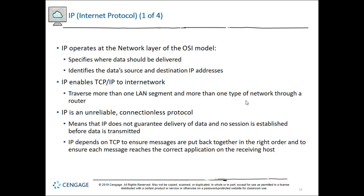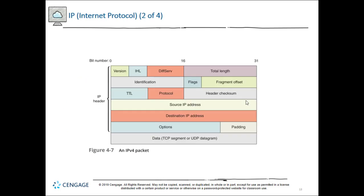IP is a connectionless protocol that operates at the network layer of the OSI reference model. It specifies where the data needs to go by identifying source and destination IP addresses — not MAC addresses, which are a data link layer function. Routers use IP to get data from one network to another, and it needs TCP to ensure messages are reassembled correctly at the destination.